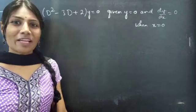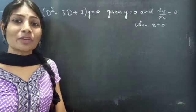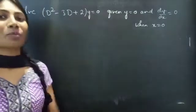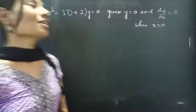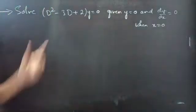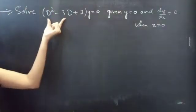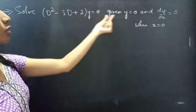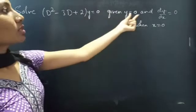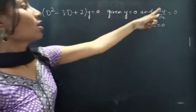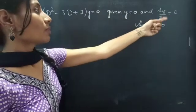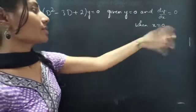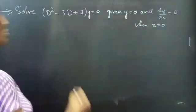Hello everyone, this is Jay Kalpana here. In this video we are going to solve the given problem. Problem: solve (D² - 3D + 2)y = 0, given y = 0 and the derivative of y with respect to x equals 0 when x = 0.